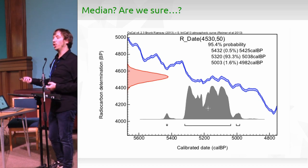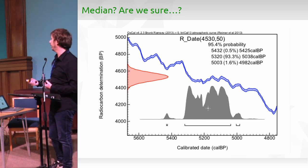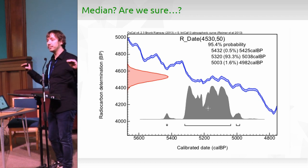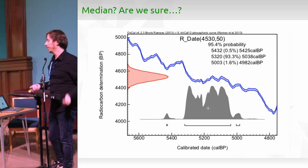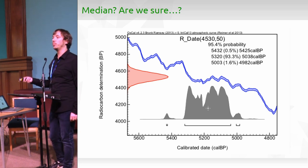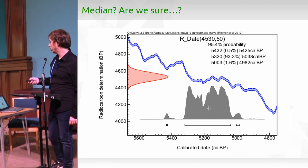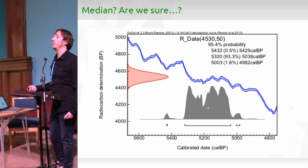On top of that, depending on the period you are working with, you could have different probability distributions because of things like the Hallstatt plateau. When this happens, the probability distribution becomes very flat, the error increases significantly, and if you are working in areas where Neolithic dates fall in the Hallstatt plateau, the method used for Western Europe may not work well.